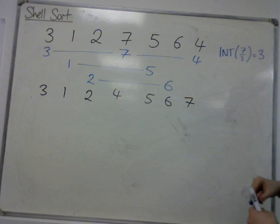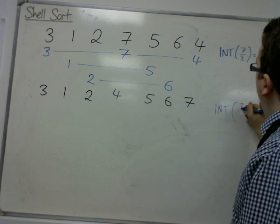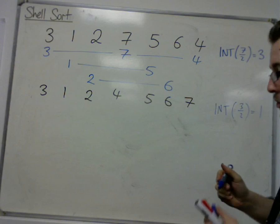From having 3 sublists, you then do the integer part of 3 over 2. Well, 3 over 2 is 1.5, so the integer part is just 1.